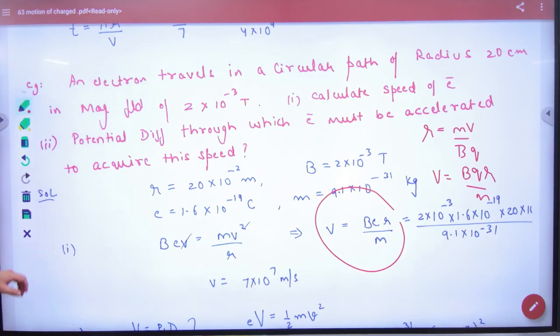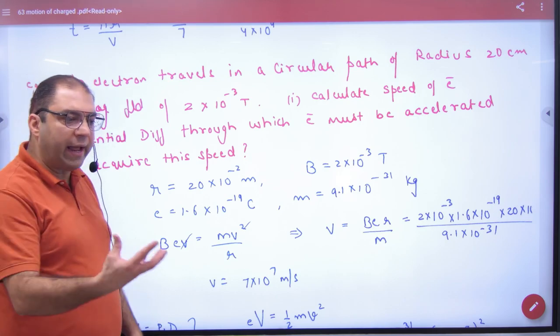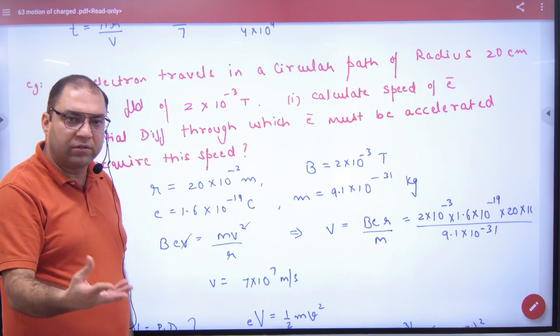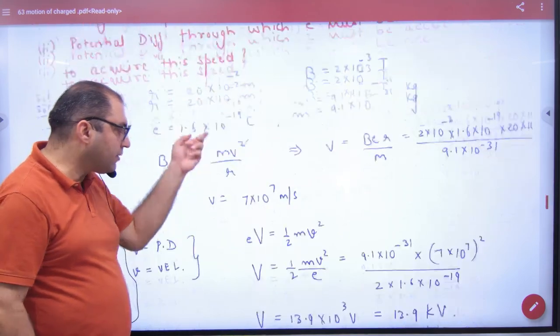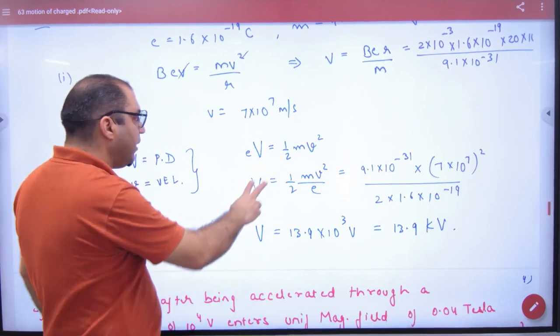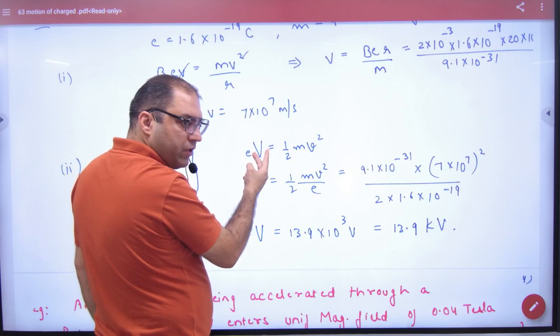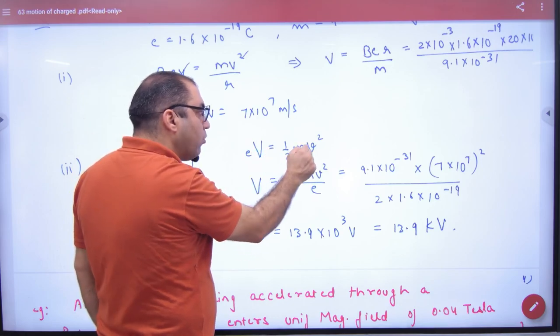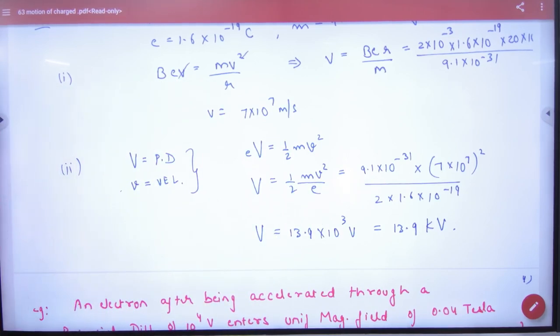Now he says that the potential difference through which electron must be accelerated to acquire this speed. Then tell me what capital V potential so that the speed acquired? If the speed of electron acquired, what will be kinetic energy? Half mv squared. And what will be the corresponding potential? Charge into potential. So here capital V will be removed and small v will be removed. The mass of electron knows that the potential can be calculated.